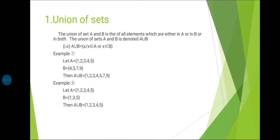First topic: union of sets. The union of sets A and B is the set of all the elements which are either in A or in B or in both. The union of sets A and B is denoted A union B. That is, A union B = {X such that X belongs to A or X belongs to B}.